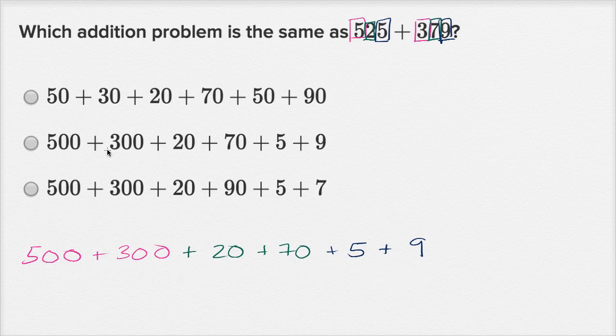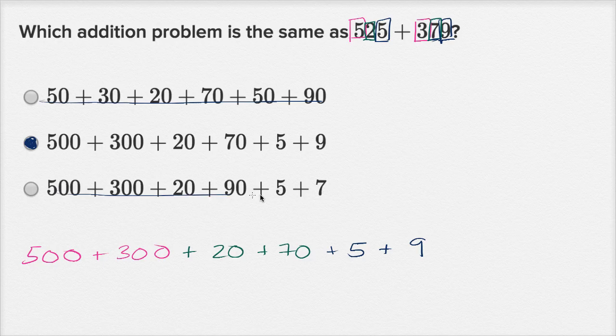So 500 plus 300. This first choice has no 500 or 300 in it. So we can rule that out. 500 plus 300 plus 20 plus 70 plus 5 plus 9. That's exactly what I wrote down. This last choice breaks down. They wrote 90 instead of 9, and then they wrote 5, and then they wrote 7 instead of 70. That 7 is in the tens place. It's not in the ones place. We ruled that one out as well.